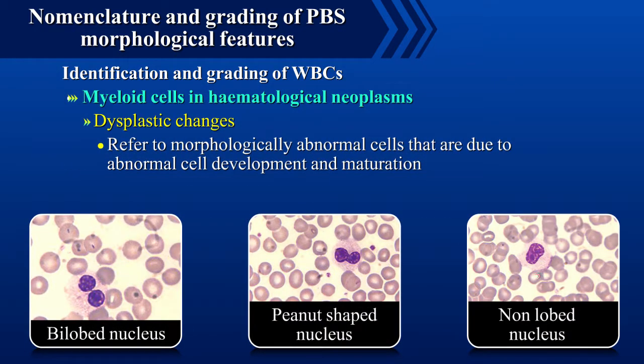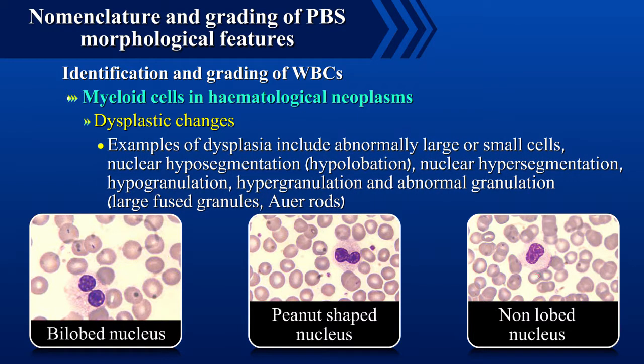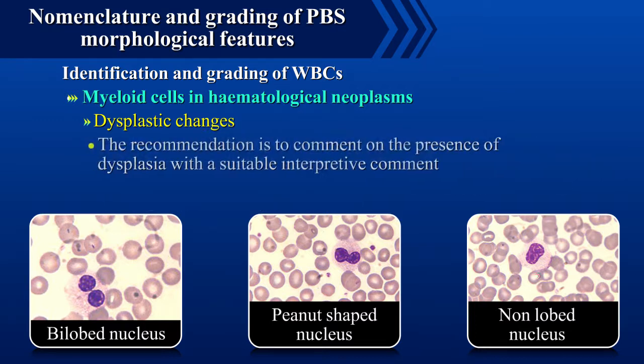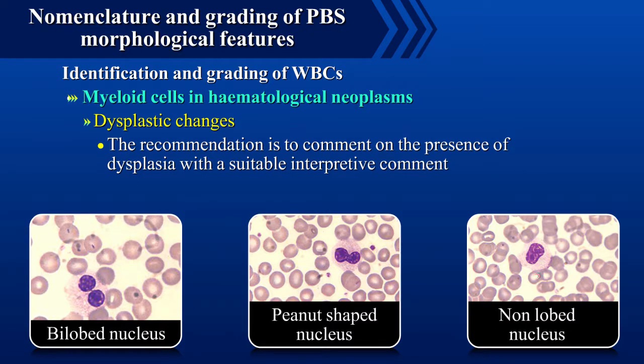Dysplastic changes refer to morphologically abnormal cells that are due to abnormal cell development and maturation. Examples of dysplasia include abnormally large or small cells, nuclear hyposegmentation, nuclear hypersegmentation, hypogranulation, hypergranulation, and abnormal granulation. Abnormal granulation may be in the form of large fused granules or Auer rods. The recommendation is to comment on the presence of dysplasia with a suitable interpretive comment.